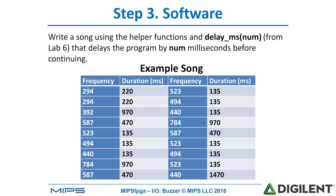Finally, we'll write the application that actually creates a song using the buzzer. The left column shows the frequency, and the column next to it on the right shows the duration of that frequency. We'll also build another helper function called delay_milliseconds, which delays the program for num milliseconds. This was written in lab six.